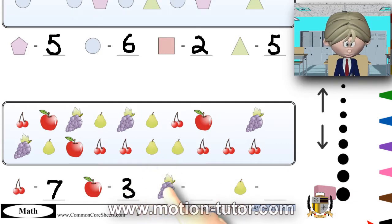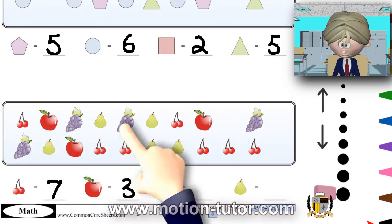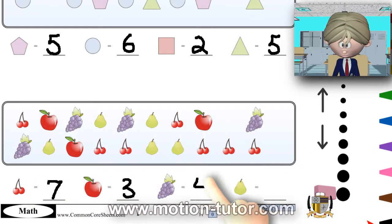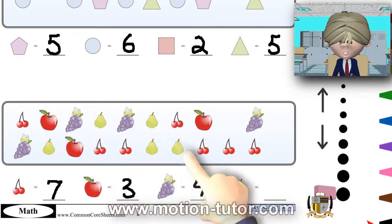How many grapes? One, two, three, four grapes. And finally, how many pears? One, two, three, four, five pears.